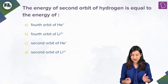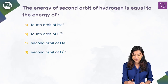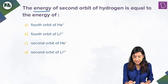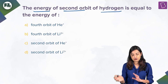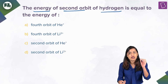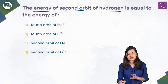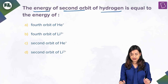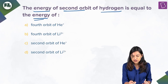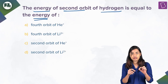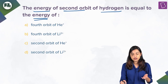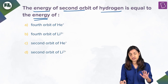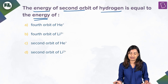In this question we are talking about Bohr's model of the atom. The energy of the second orbit of hydrogen is equal to what? Basically, an electron is in the second orbit of the hydrogen atom, and we have to find out which of the options A, B, C, or D gives the same energy.